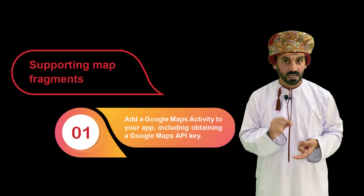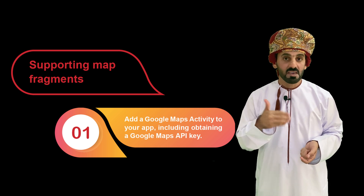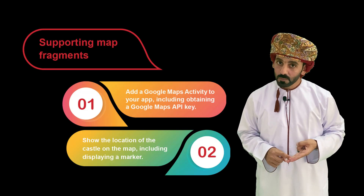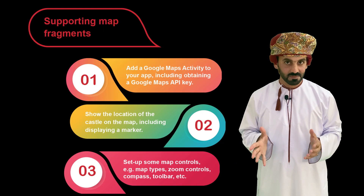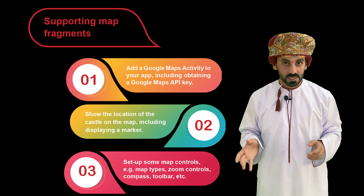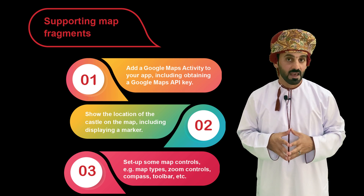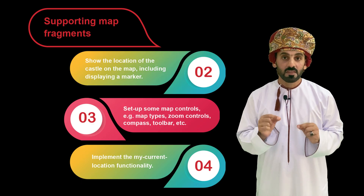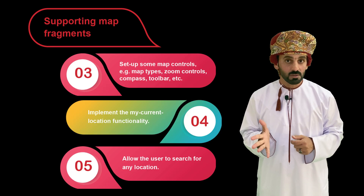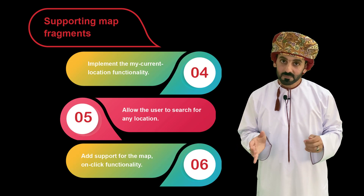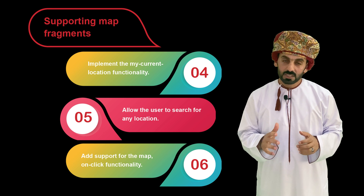To implement map fragments, let's follow these six steps. Step one: add a Google Maps activity and make sure you get a Google Maps API key. Step two: implement the code necessary to show the castle location on the map fragment. Step three: experiment with some map controls, including zoom controls, toolbar, map types, and things like that. Step four: implement the my current location functionality. Step five: allow the user to search for any location or place that they enter. Step six: implement the code necessary to activate the on-click map functionality.